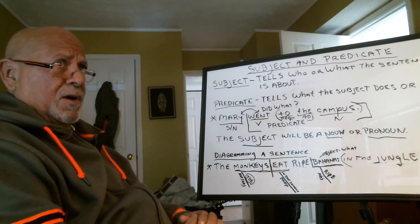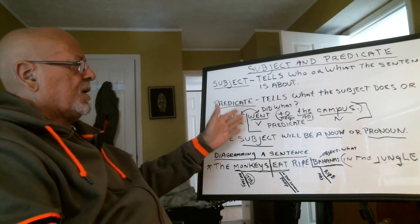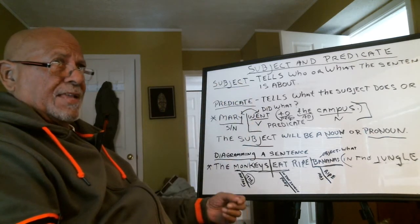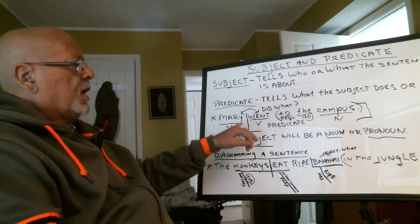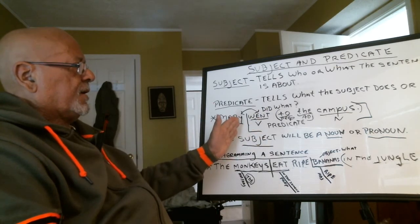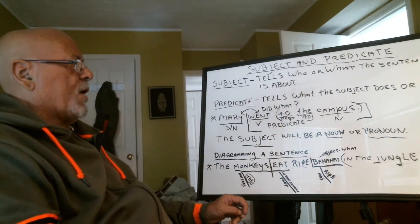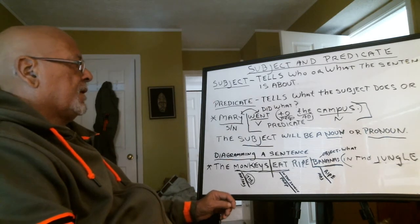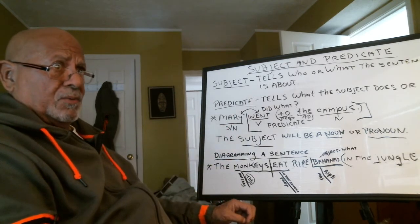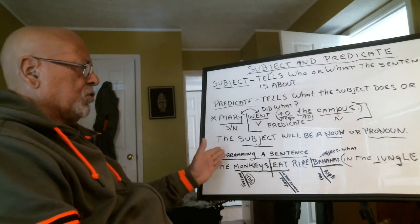Let's review: the subject is a noun or pronoun — nothing else. It tells who or what the sentence is about. The predicate tells what the subject does or is. Example: 'Mary went to the campus.' What's the subject? Mary — a proper noun. What did she do? She went. So 'went' is the verb. The predicate is the verb and everything that follows: 'went to the campus.'